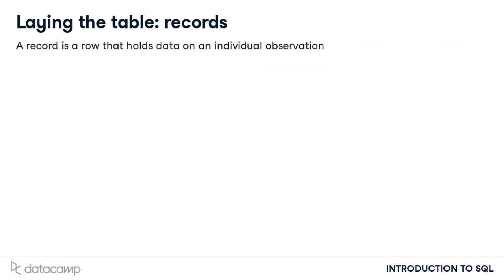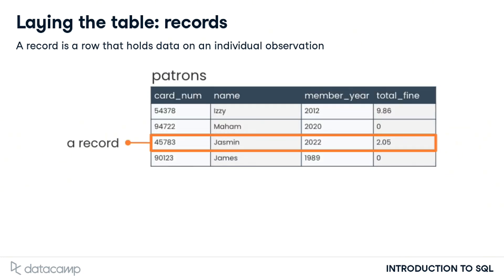A record is a row in a table. It holds data on an individual observation. Taking a look at the patrons table, we see that the table has four records, one for each of the patrons. The record for Yasmin indicates that she became a member in 2022 and owes $2.05 in fines.